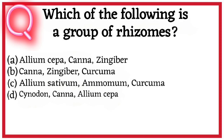Question thirteen. Which of the following is a group of rhizomes? A. Allium cepa, Canna, Zingiber; B. Canna, Zingiber, Curcuma; C. Allium sativum, Amomum, Curcuma; D. Cynodon, Canna, Allium cepa. So correct answer hai option B.